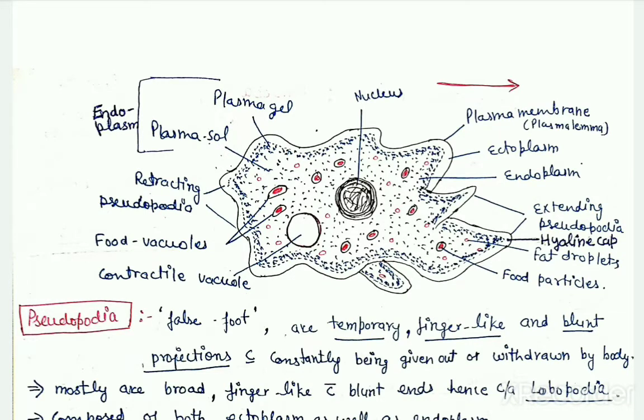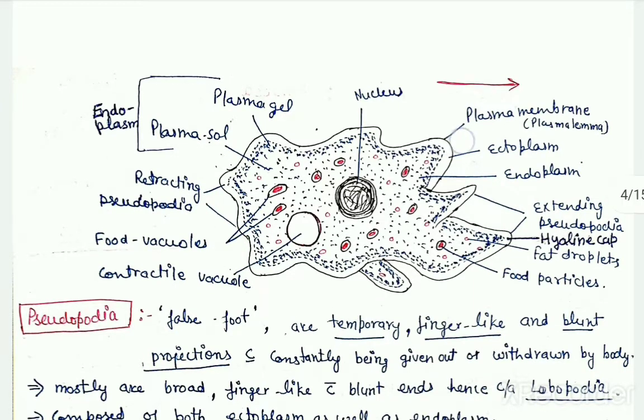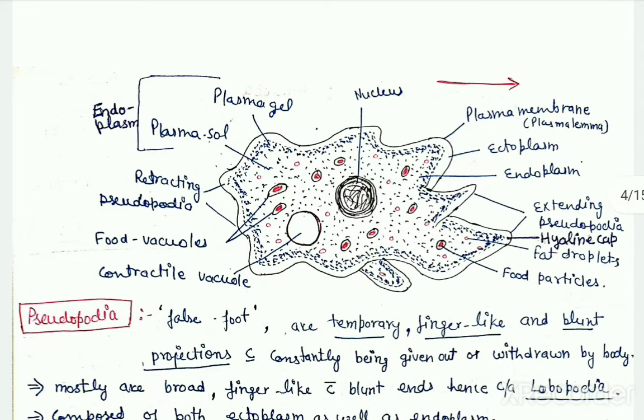You all must be knowing that amoeba has an irregular shape or does not have any fixed morphology. That is due to presence of numerous temporary finger-like projections on its surface which are called pseudopodia. Pseudopodia in case of amoeba are blunt, meaning the tips are not sharp but blunt. Pseudopodia consist of both ecto and endoplasm.